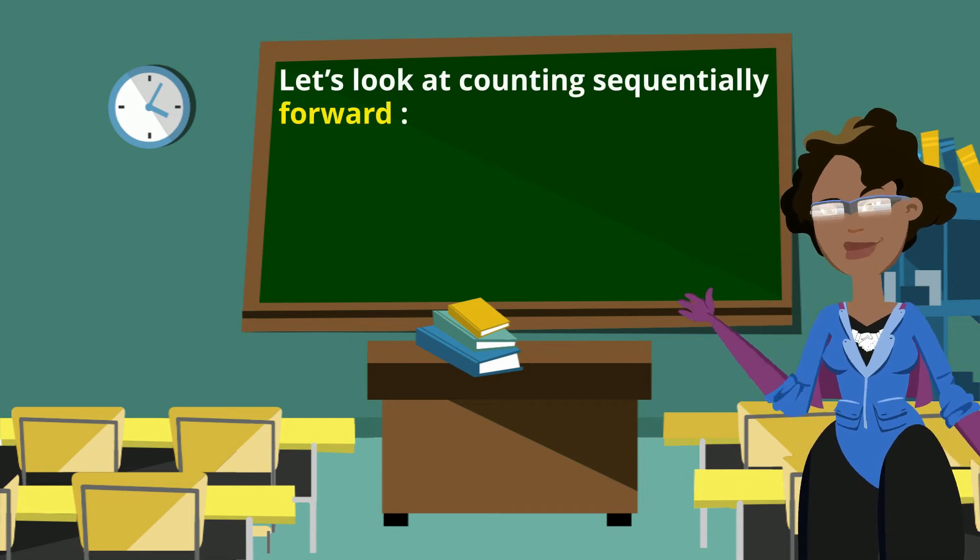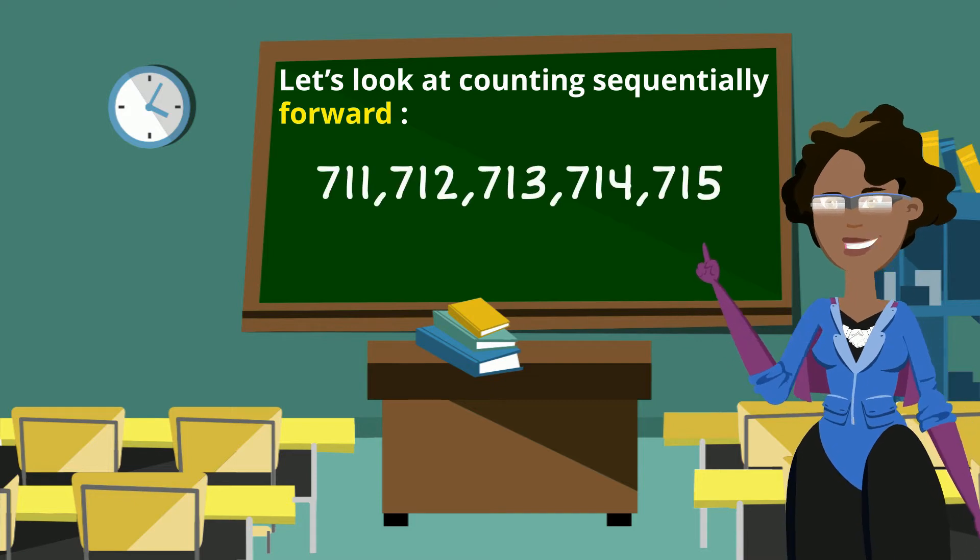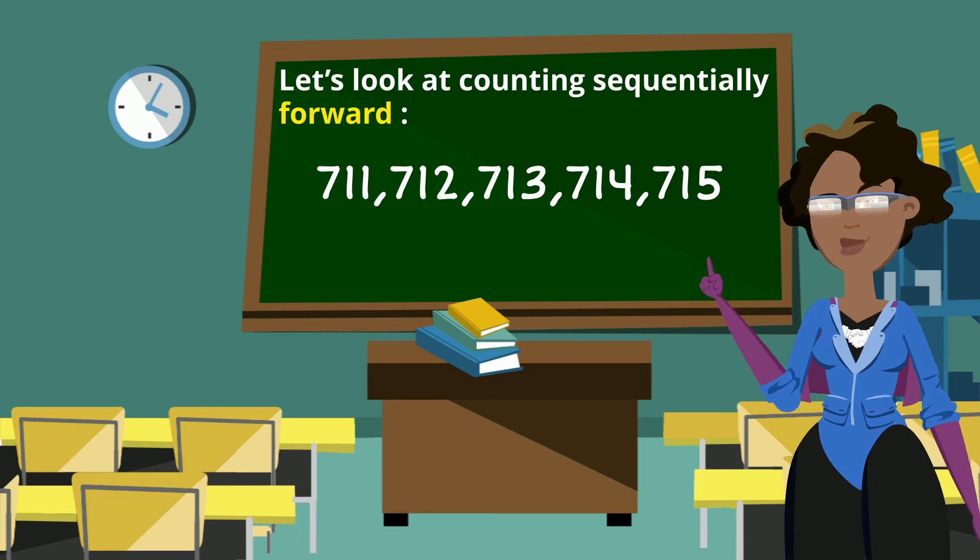Let's look at counting sequentially forward. This is what it looks like: 711, 712, 713, 714, 715.